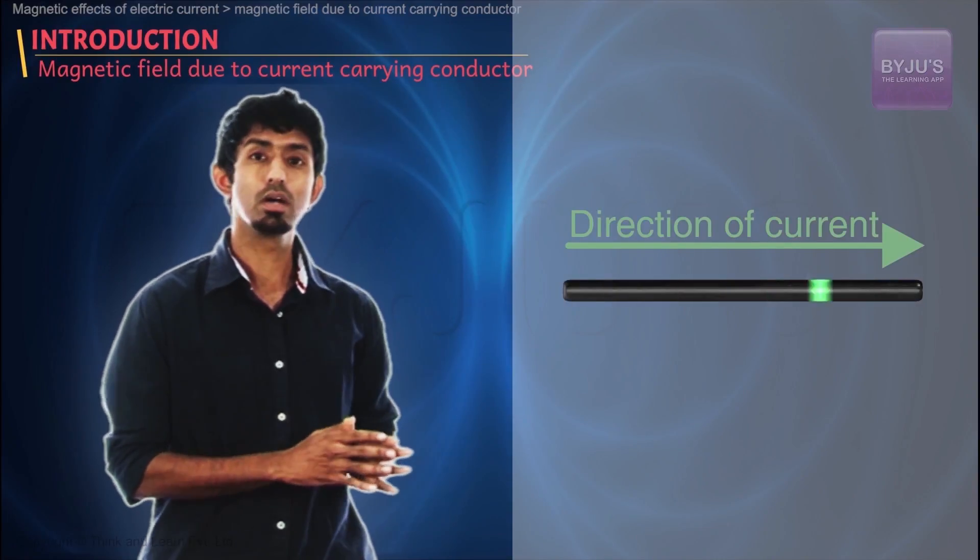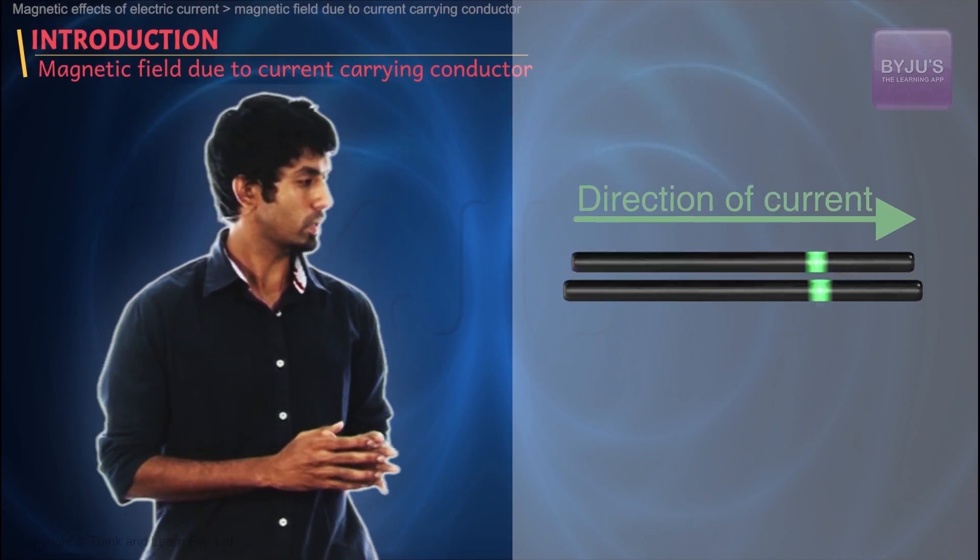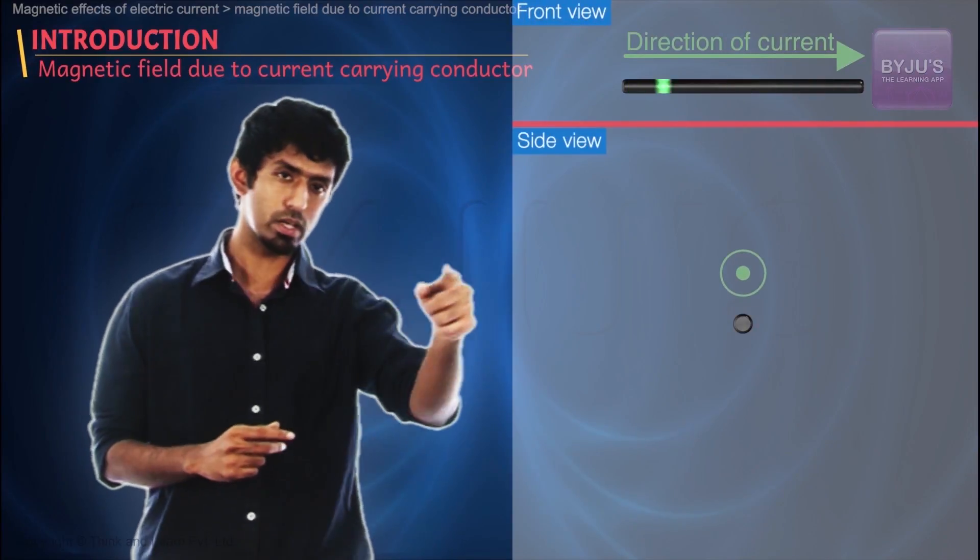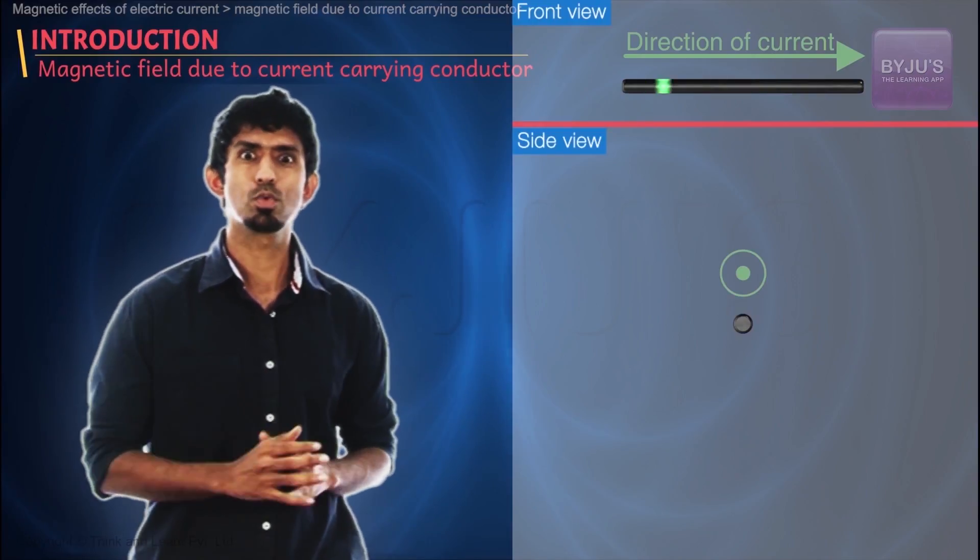We would say the current is flowing in that particular direction. Imaginary positive charges. If that were true, then if I were to turn this wire this way, such that the wire is coming right at you, with the current flowing right at you, then let's imagine what would happen.